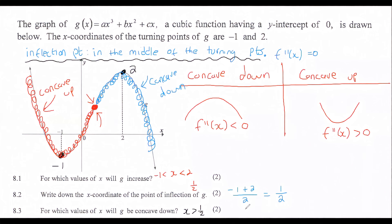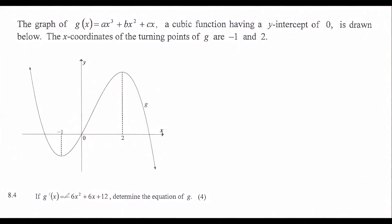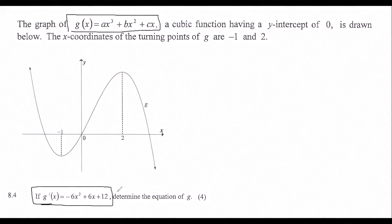In interval notation, x must be an element from one half all the way up to infinity. Now, they've given us the original graph of g and told us that the first derivative equals a given expression. They want us to determine the equation of g — essentially going backwards. There's a technique called integration for this, but most students watching won't have covered that.